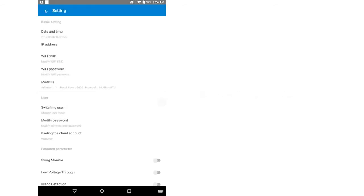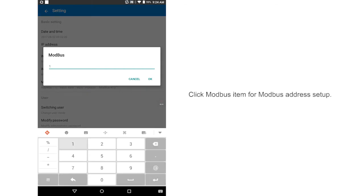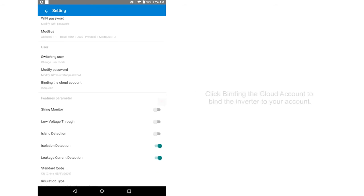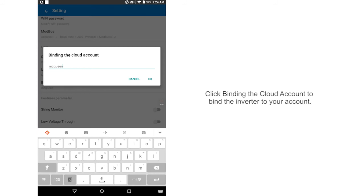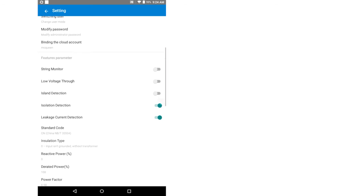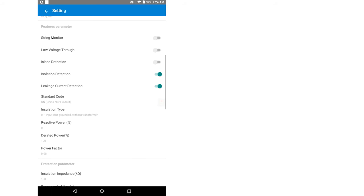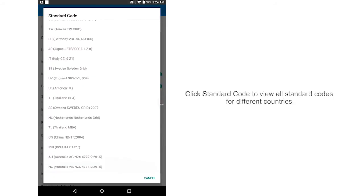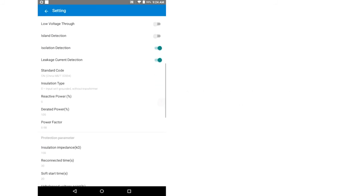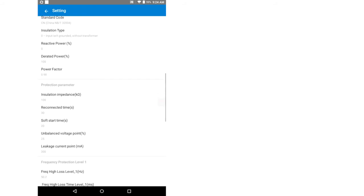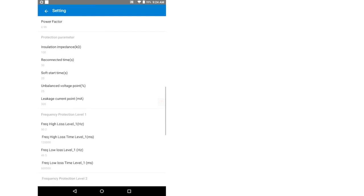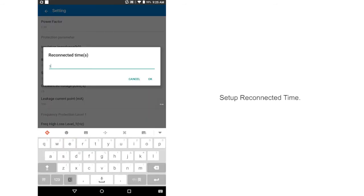Click Modbus item for Modbus address setup. Click binding the cloud account to bind the inverter to your account. Click Standard Code to view all standard codes for different countries. Set up reconnected time.